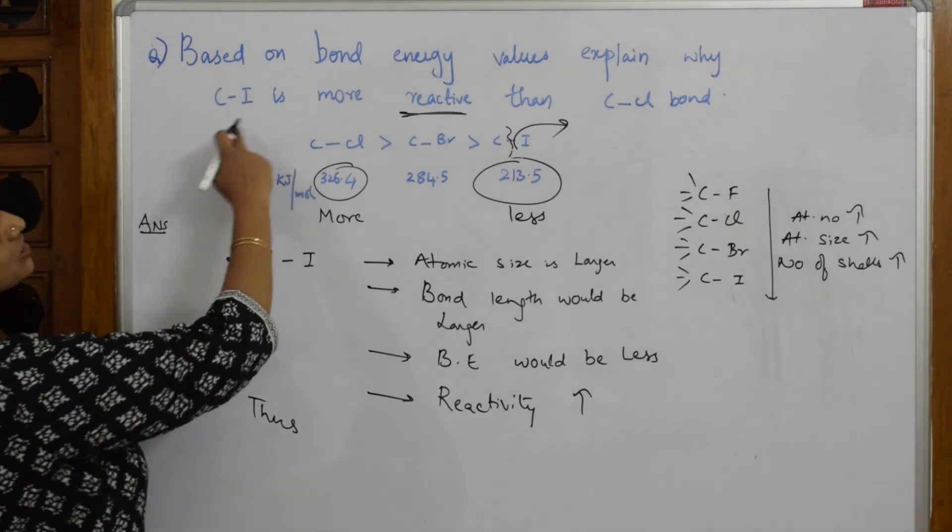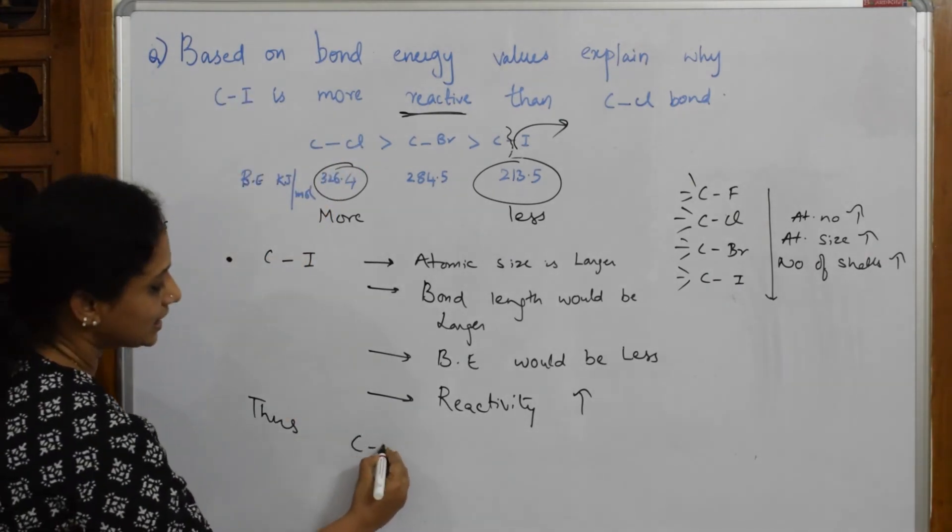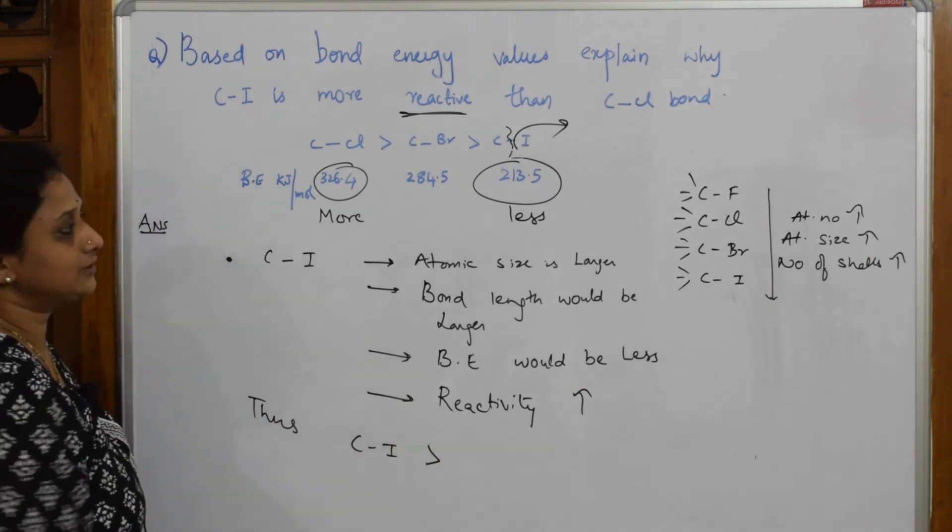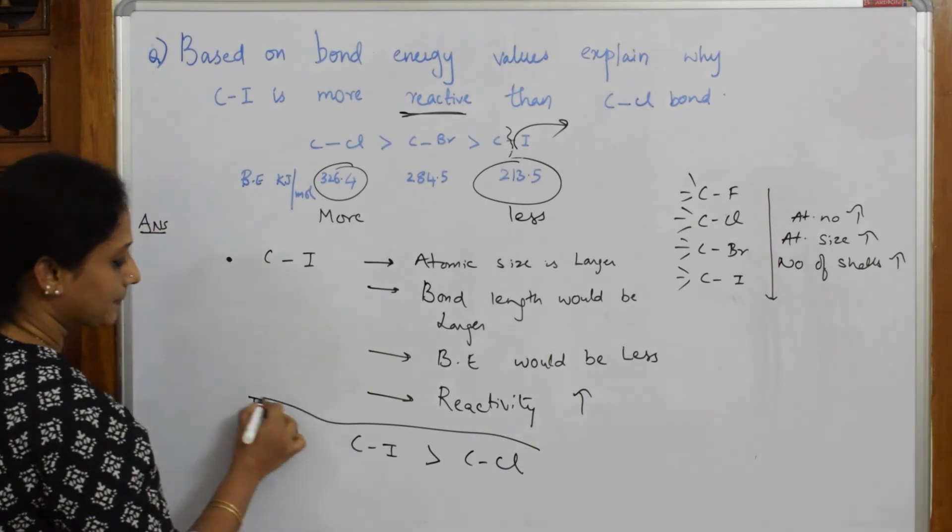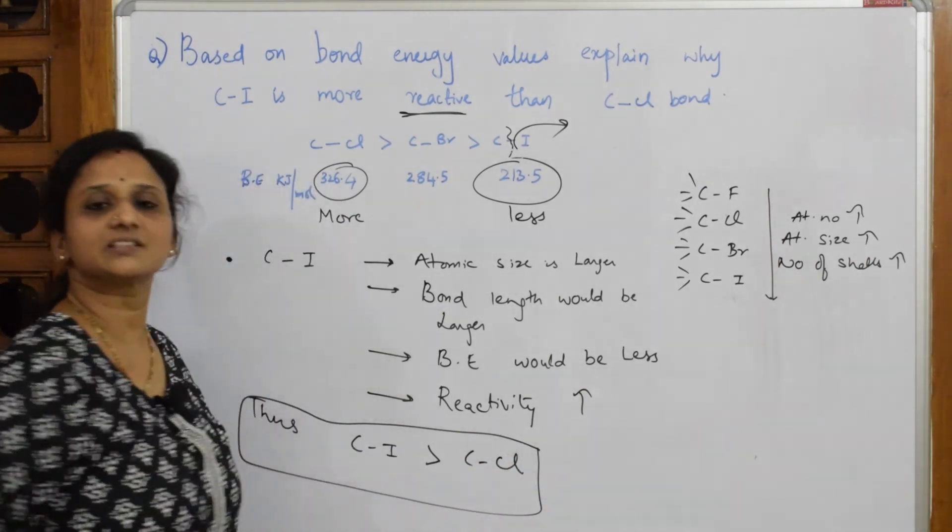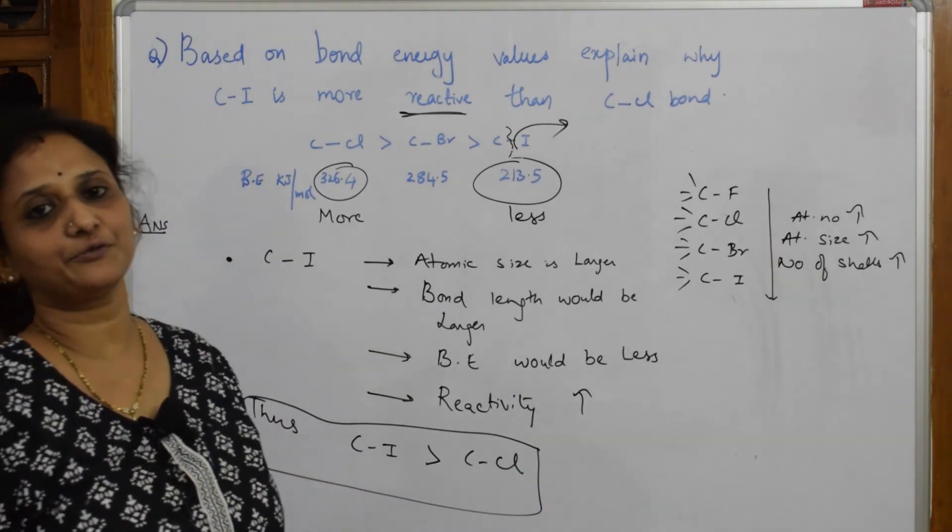Thus, based on the values, CI is more reactive than CCl. This is how you're going to justify your answer. Thank you for watching.